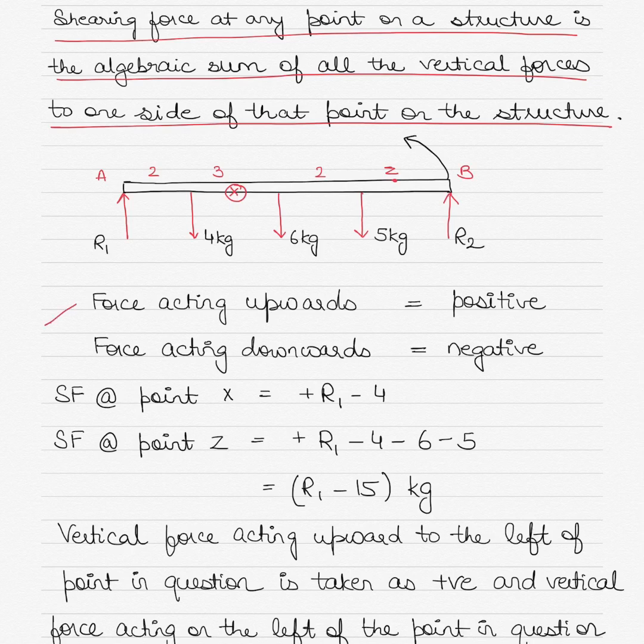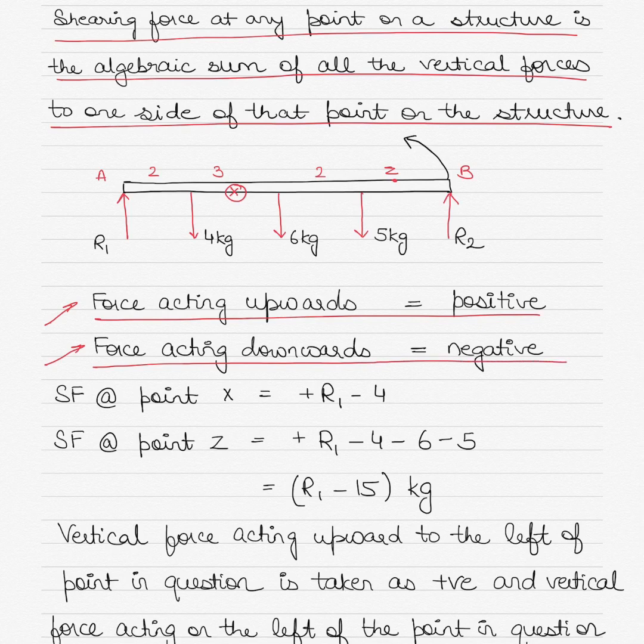As you see here on the beam, the forces are shown. The force acting upwards, that is R1 and R2, will be positive, and the force acting downwards - 4 kilograms, 6 kilograms and 5 kilograms - is shown as negative. Therefore, the shearing force at point X will be equal to +R1 - 4. R1 is positive because the force is acting upwards, and 4 is negative because it is acting downwards.